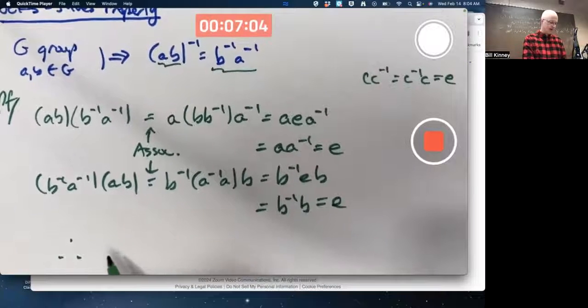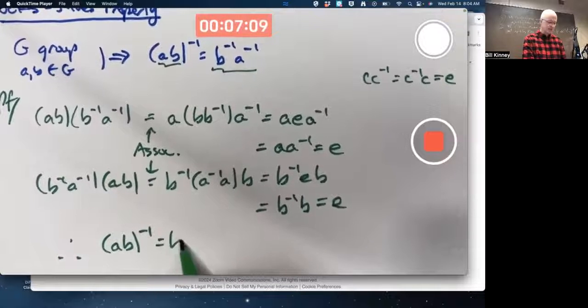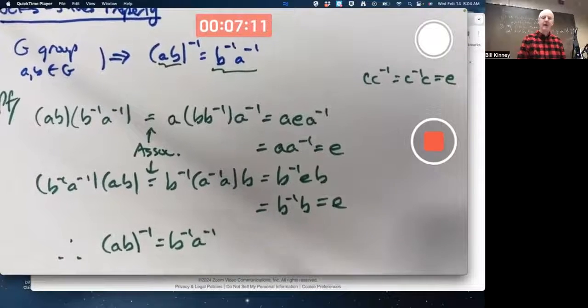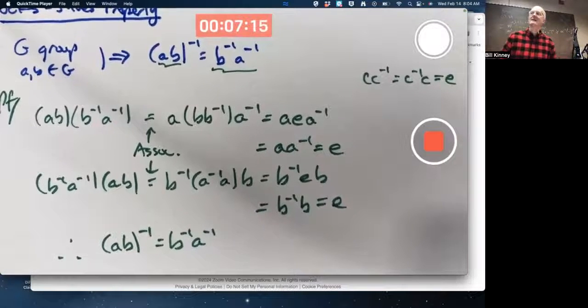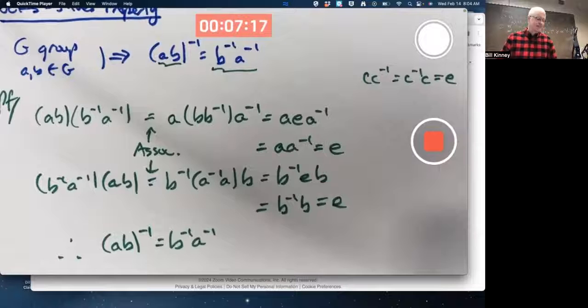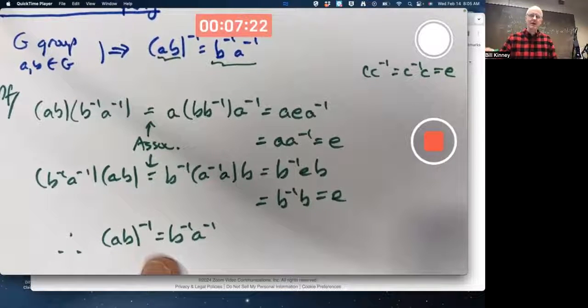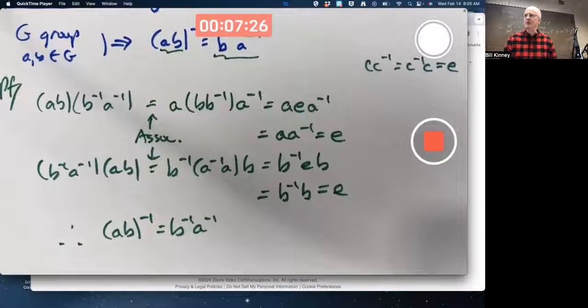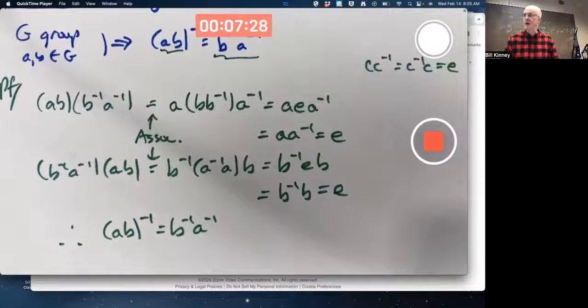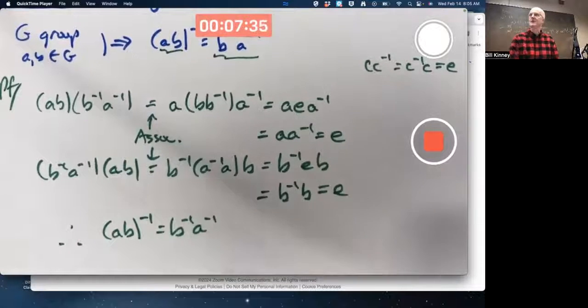Therefore, the inverse of A times B is B inverse times A inverse. Though I am purposely not saying something else that probably should be said here, because I'm wondering if you know it. What else should I say to get to this conclusion? That's one of the theorems in chapter two. What am I really using in going from these two equations to this equation?